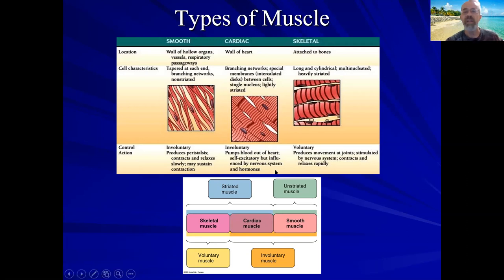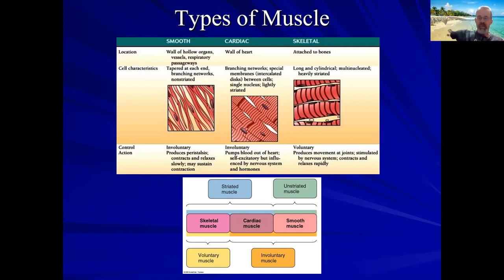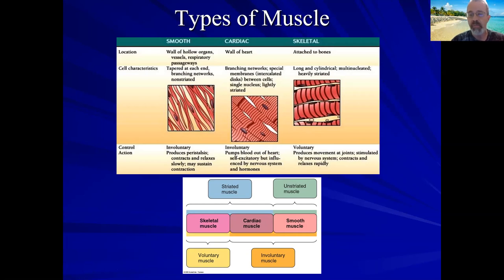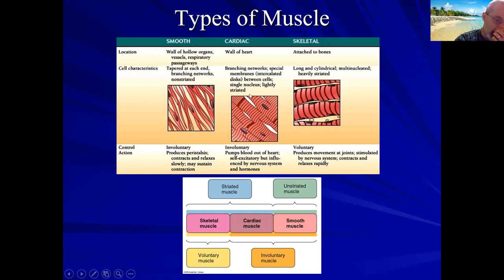Skeletal muscle is considered voluntary in the sense that we have to willfully initiate a movement — raising our hand, writing stuff down, walking. It's under the control of the somatic branch of the peripheral nervous system.